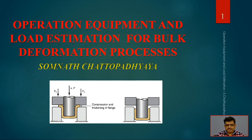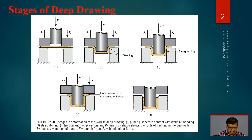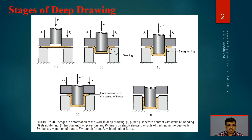As per the title slide, this is the deep drawing operation and we will find out what is happening in terms of load estimation for bulk deformation processes. We can see the different stages of deep drawing. The first stage is the initial state, where the punch is just before contact with the work. It is placed in lower fixtures, and above it the punch is ready along with the work piece material to be deformed.